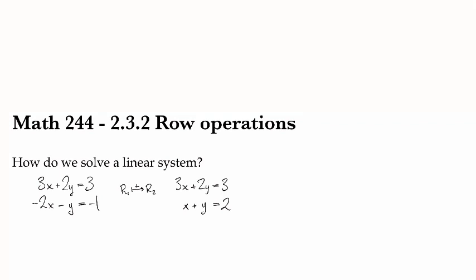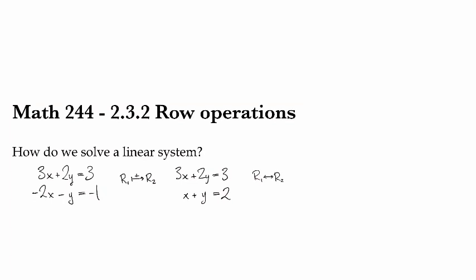Now what else can I do in terms of operations to help solve? I can also write these in whatever order I want. So I could swap row 1 and row 2, and that would give me x plus y equals 2 at the top now, and 3x plus 2y equals 3 at the bottom. That's still going to be perfectly fine. It's not going to change the solution at all. Maybe it wasn't especially helpful, but whatever.